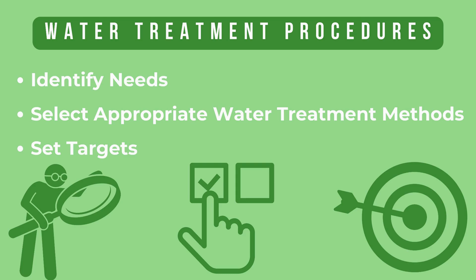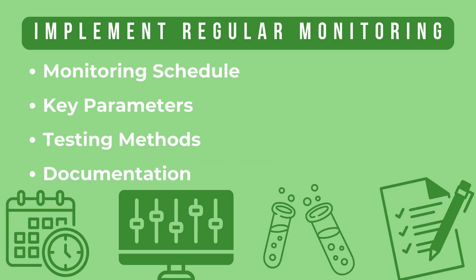Set target water quality parameters in line with ST108 standards to create a baseline for your goals. Regular monitoring is essential. By establishing a schedule for regular testing at various system points, we can track critical parameters like pH, alkalinity, bacterial levels, and endotoxins. Each of these helps ensure that we maintain consistent water quality.